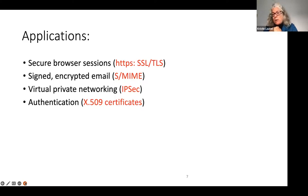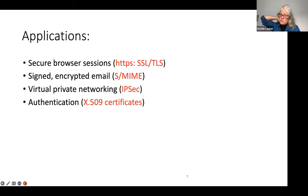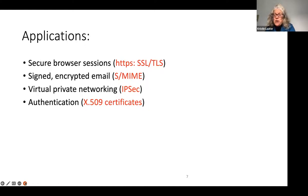RSA is based on the hardness of factoring, and Diffie-Hellman and elliptic curve Diffie-Hellman are based on the difficulty of the discrete logarithm problem in various groups. There are also great protocols based on the hardness of inverting the Weil pairing on elliptic curves. All of these problems are deployed in the real world through developing protocols that satisfy security properties, according to security models developed by computer scientists, and then the standardization process brings these protocols to the real world.